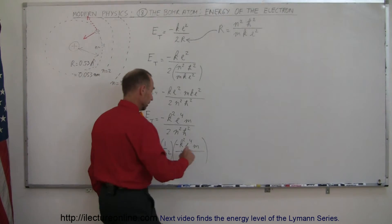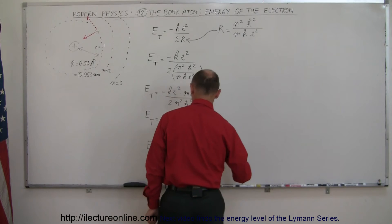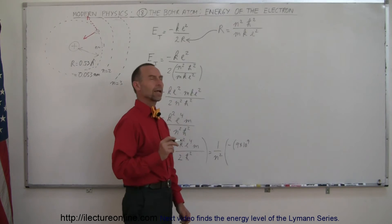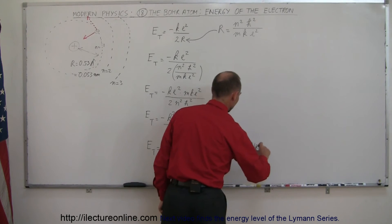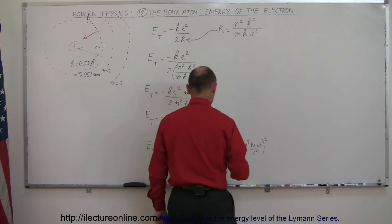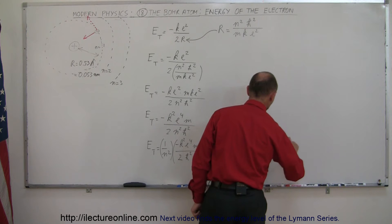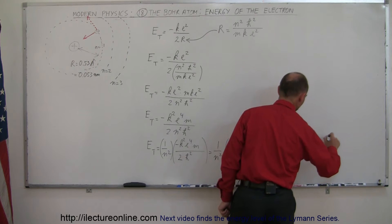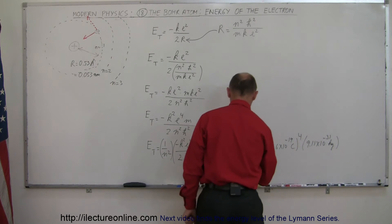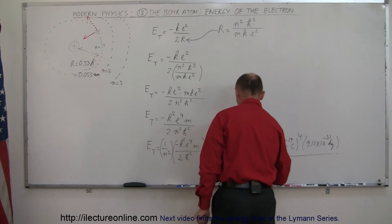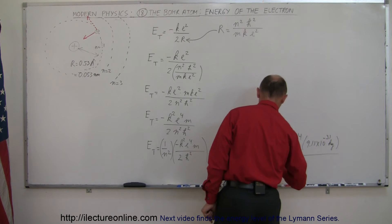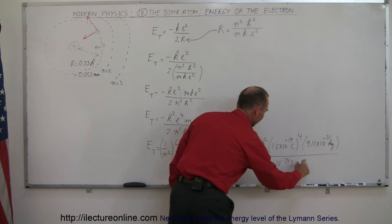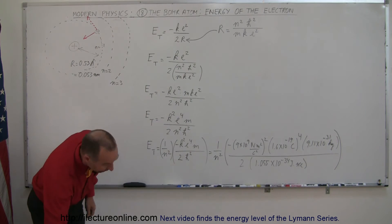Plugging in the numbers, this is equal to one over n squared times: minus k, where k is nine times ten to the ninth (with units newtons times meters squared divided by coulombs squared), and we square that; times e, which is 1.6 times ten to the minus 19 coulombs, to the fourth power; times the mass of an electron, 9.11 times ten to the minus 31 kilograms; all divided by two times h-bar squared, where h-bar is 1.055 times ten to the minus 34 joule-seconds.